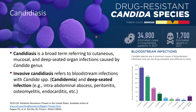Now, let's focus on candidiasis. Drug-resistant candidiasis has been a serious threat per CDC levels of emerging threats. You can see different species of candida. Candida albicans causes the most infections in the blood. Candidiasis is an umbrella term referring to both cutaneous, mucosal, and deep-seated organ infections. Invasive candidiasis specifically refers to not only bloodstream infection, but also deep-seated infection. Bloodstream infection would be called candidemia, and deep-seated infections include things like intra-abdominal abscess, osteomyelitis, endocarditis, etc.